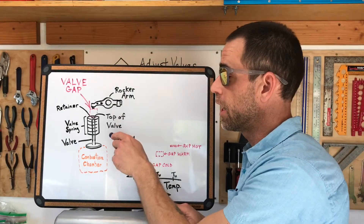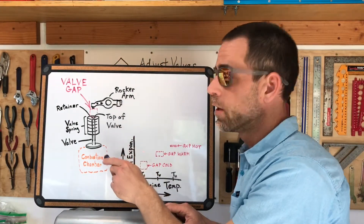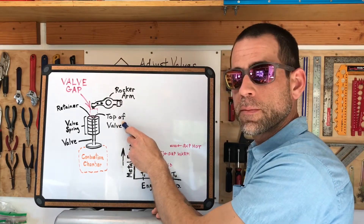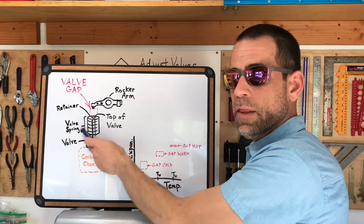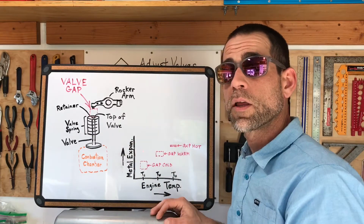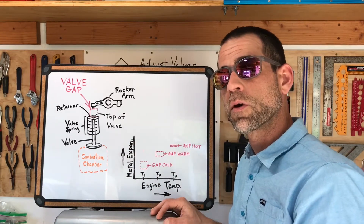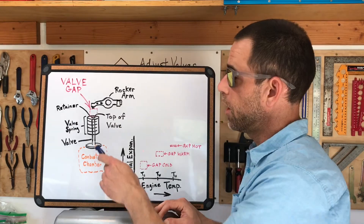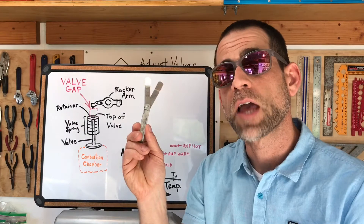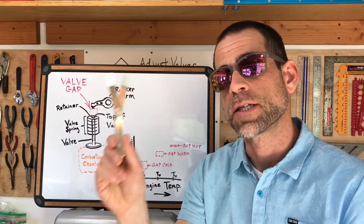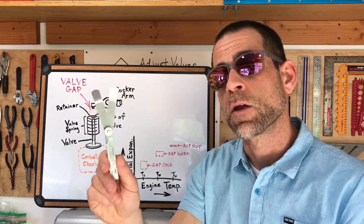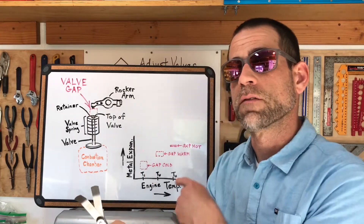In this first figure, in the upper left, I'm showing all the components of the valve train. It starts with the rocker arm at the top, and the rocker arm rides on the top of the valve stem. The valve is held up with the retainer and the valve spring, and it goes through the head and enters a combustion chamber where it either lets in that incoming air-fuel charge or lets out that exhaust charge. In red, I've drawn a box around where that valve gap is — that's where you use one of these feeler gauges to set the thickness to the manufacturer's specs. This is done when the engine's cold, and that's where the second figure comes in.